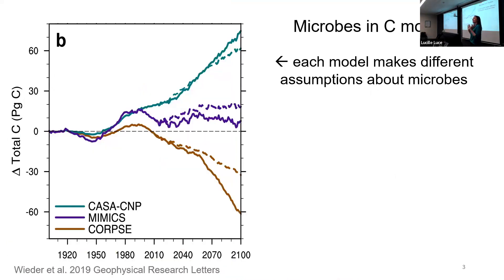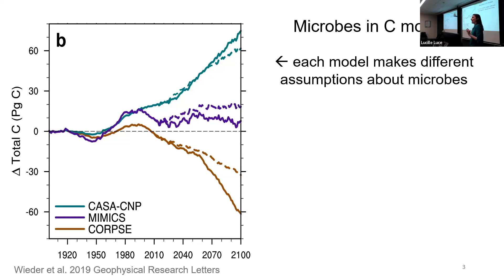The key issue here is we're trying to model carbon and predict it in the future. This graph is showing the change in total carbon stocks, either increasing or decreasing, and it predicts that out using three models to the year 2100. Each model makes different assumptions about how the microbial community works and how it processes the carbon. One model shows we're going to be building carbon stock over time, another shows negligible changes, and the last shows catastrophic losses in soil carbon. This is a huge amount of variability when we're trying to predict something as important as the climate.